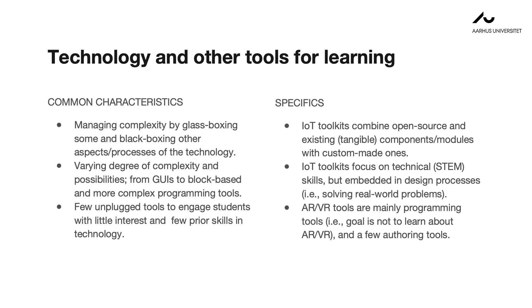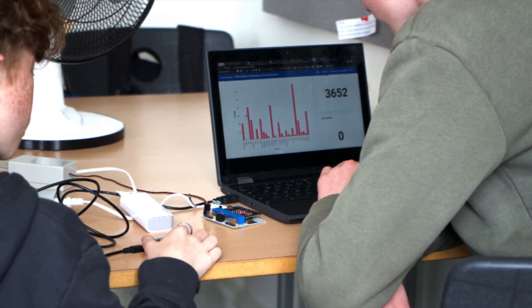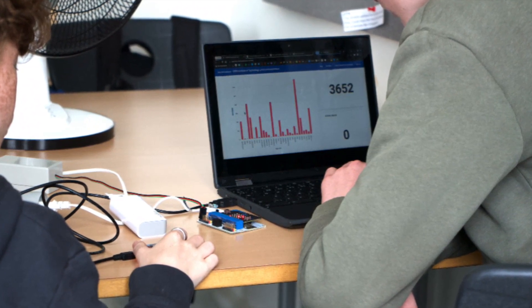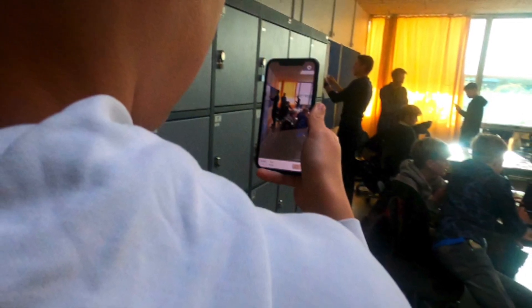A wealth of digital learning tools to introduce immersion technologies in K-12 students have been developed. Machine learning tools are typically designed to glass-box some aspects of the technology by black-boxing others. Graphical user interfaces and block-based coding environments are most often used to enable students to develop, train, and test simple machine learning models, but in a few cases students engage in more advanced programming to develop machine-powered applications. Internet of Things tools are often open source and combine existing with custom-made components and models to enable students to design and develop IoT solutions. Augmented Reality and Virtual Reality tools are predominantly programming tools that do not necessarily enable students to learn about the technology, with an additional small group of authoring tools to create AR and VR game environments.